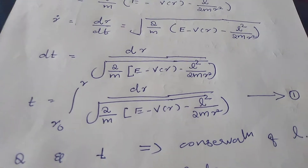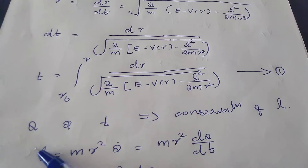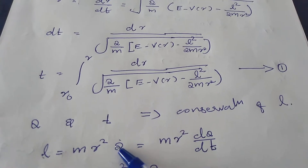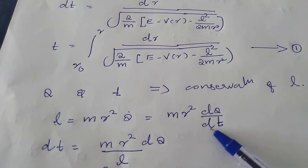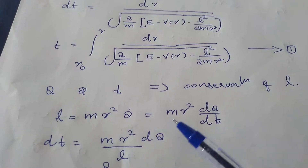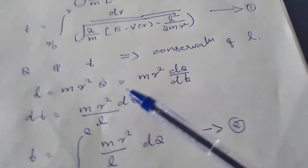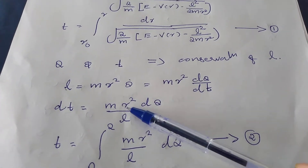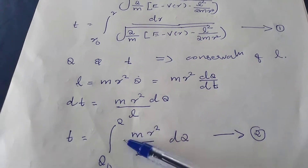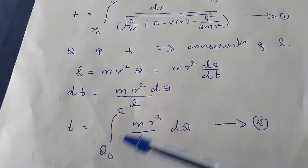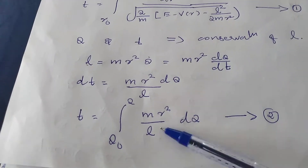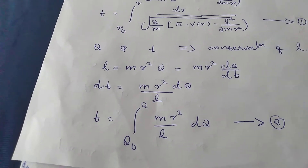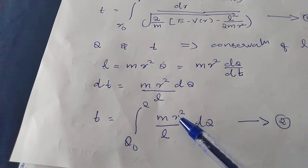Again, using conservation of angular momentum, we find the connection between theta and t. We have L equal to mr squared theta dot. We find theta dot, which is d theta by dt, so dt equals mr squared d theta by L. Connecting the two relations, t equals the integral from theta0 to theta of mr squared by L d theta. Now we substitute the r squared value; we have 1 by r squared from the orbital equation.